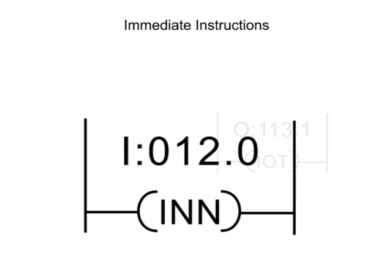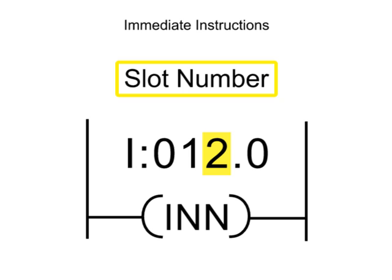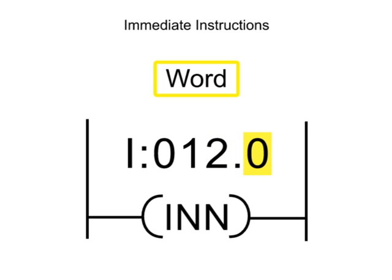Immediate instructions are addressed with the file, rack, and slot numbers separated by a decimal, with the word to be updated.